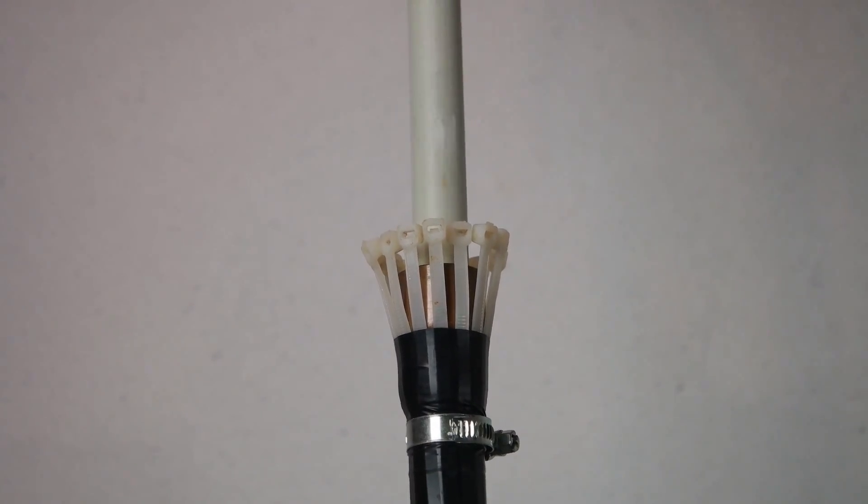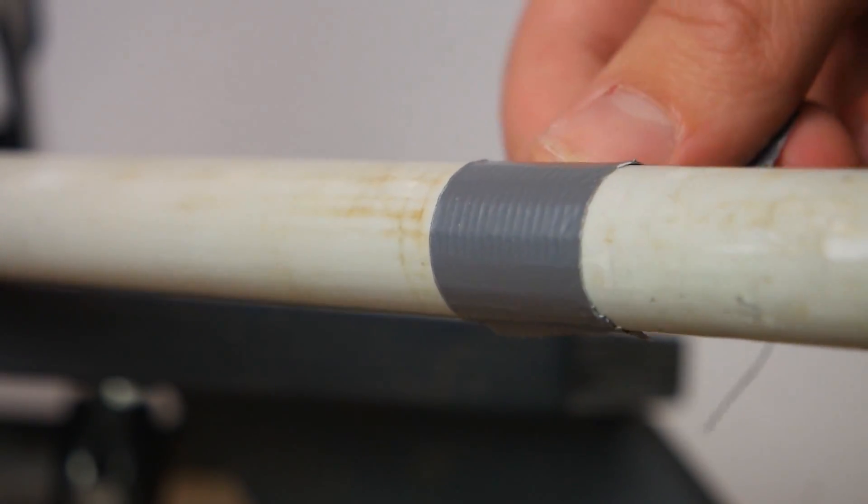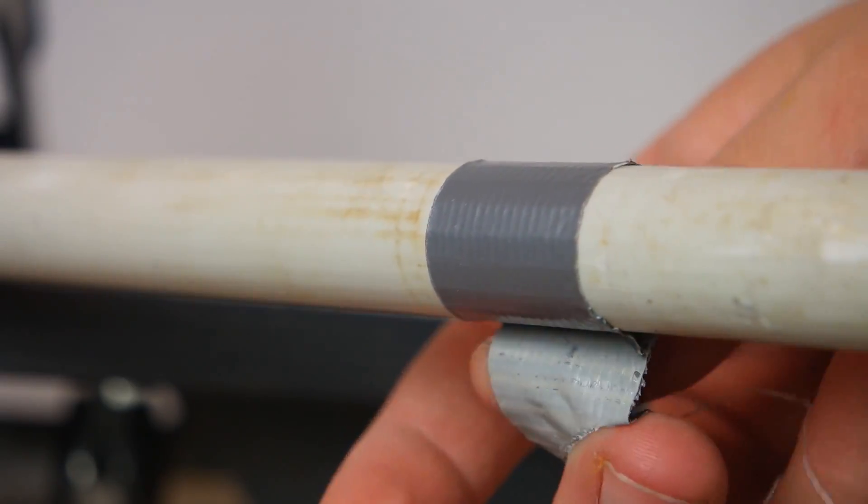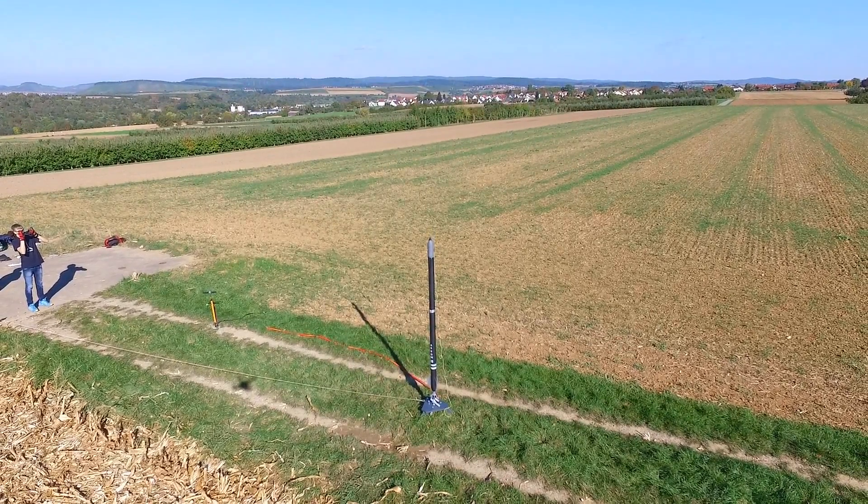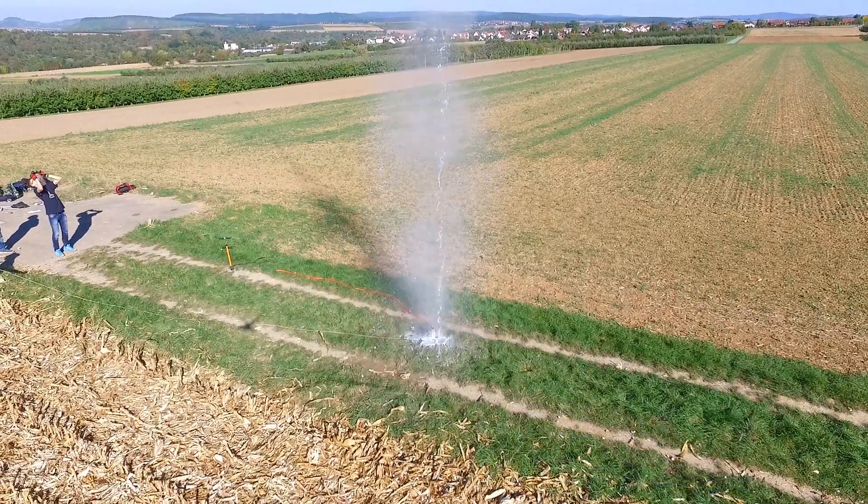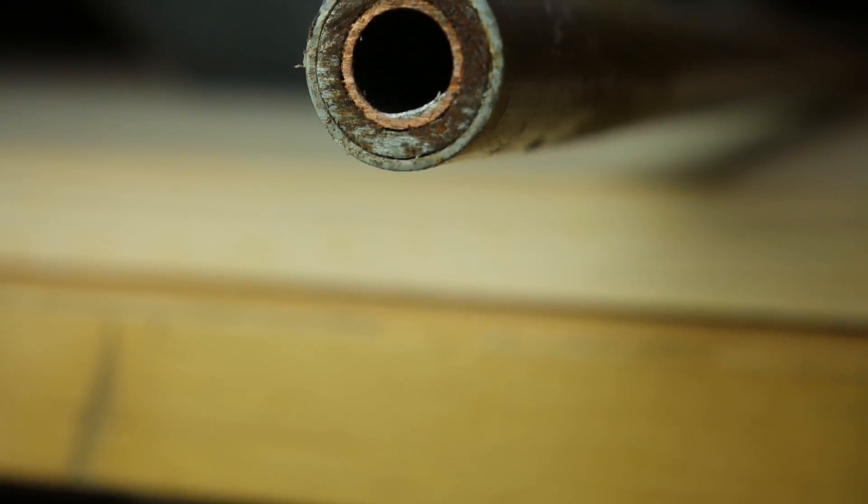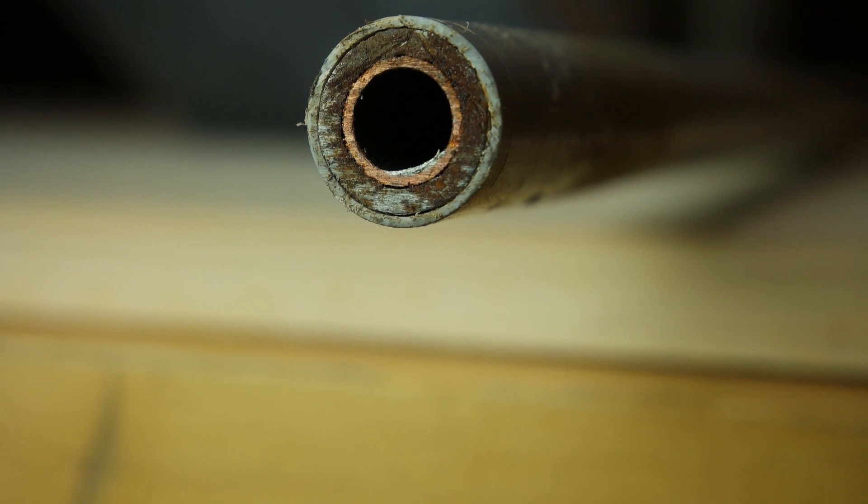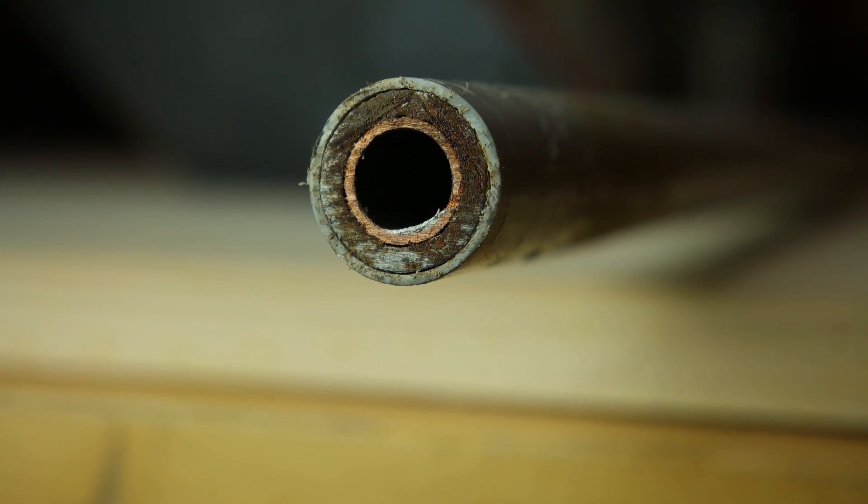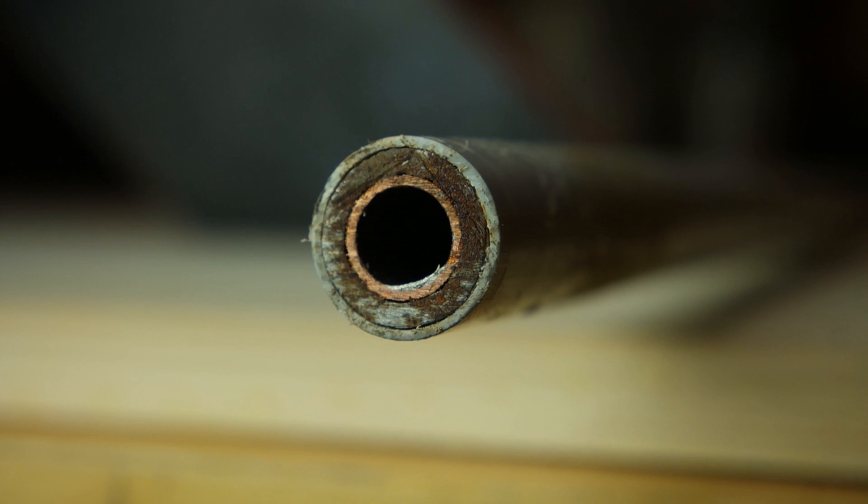We recommend wrapping some tape around the launch tube before inserting it into the launcher. Unfortunately, conventional PVC pipes are often too weak to withstand the high forces at launch. Therefore, the PVC pipe with a diameter of 20 mm should be reinforced on the inside with a steel pipe.